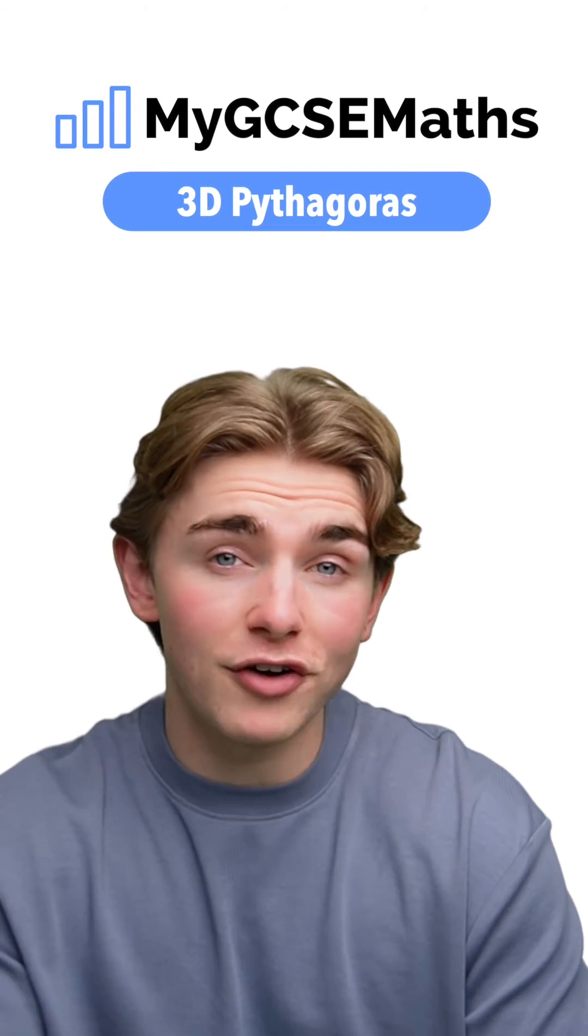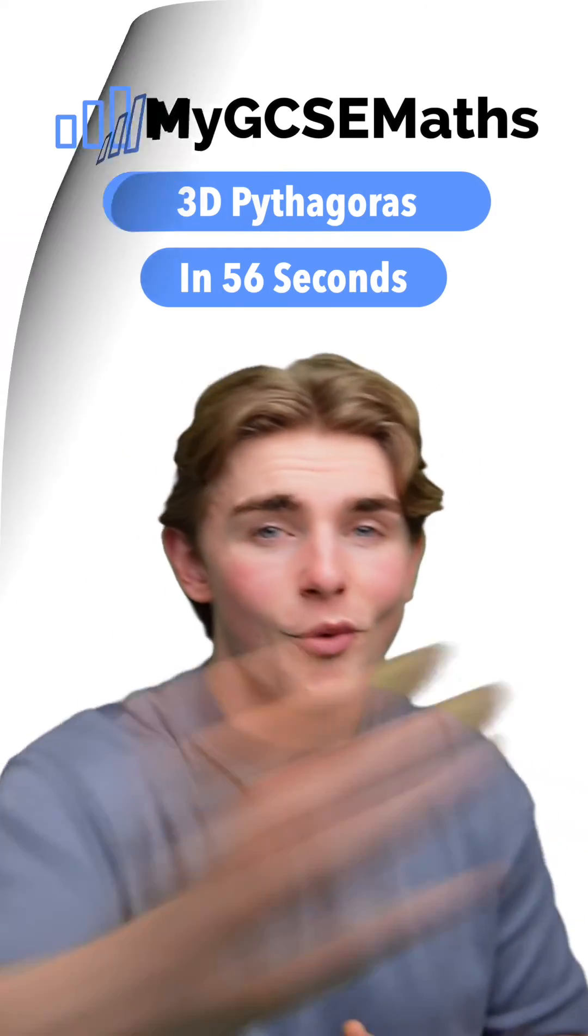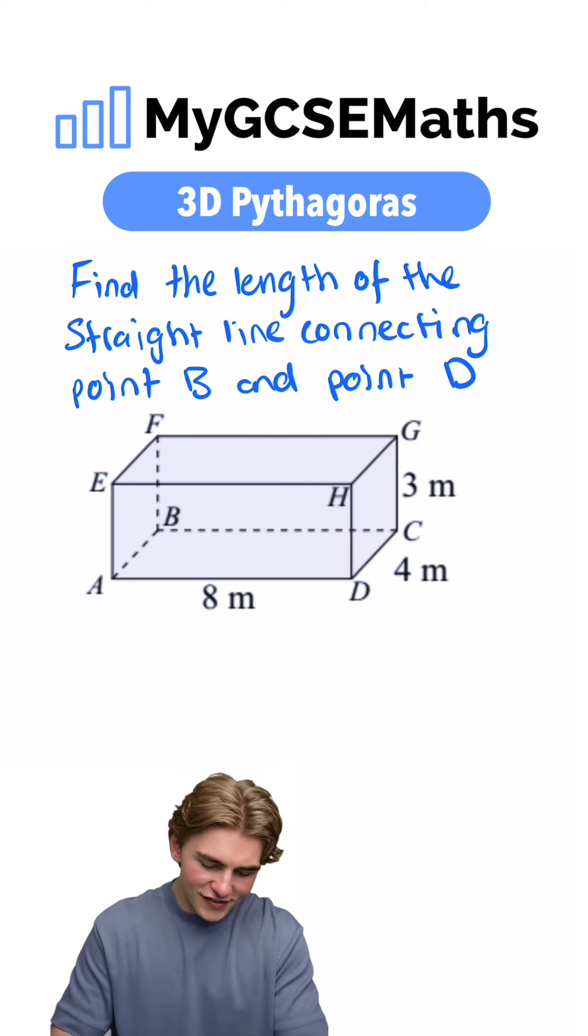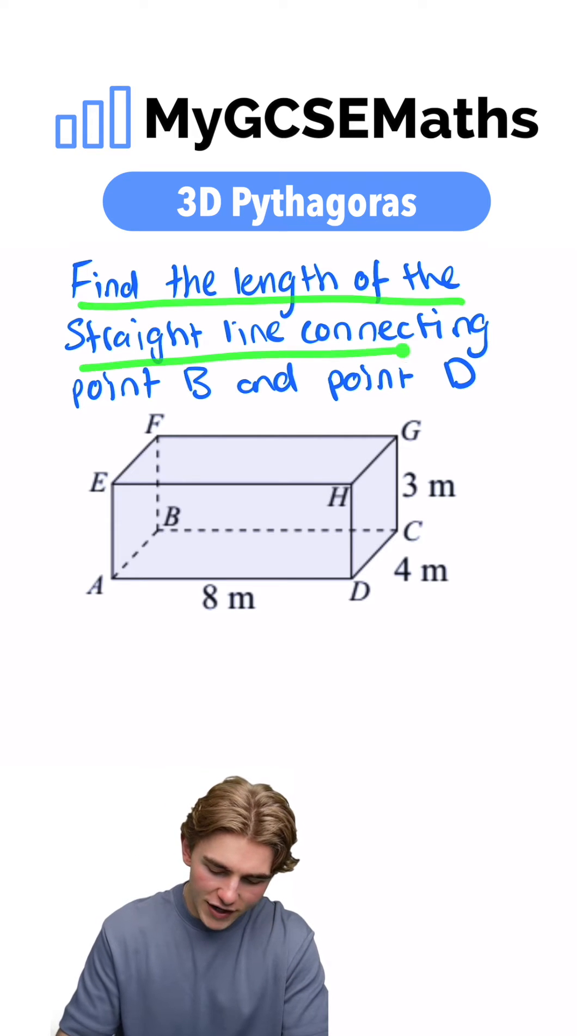GCSE Maths 3D Pythagoras in 56 seconds. Let's go. Okay, let's have a look at this. It says find the length of the straight line connecting point B and point D.